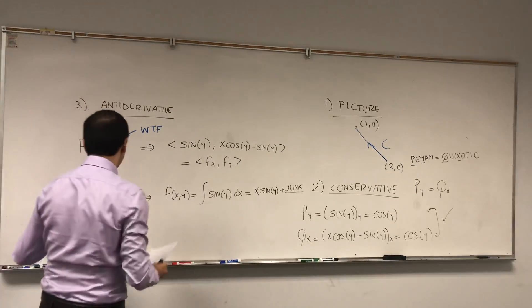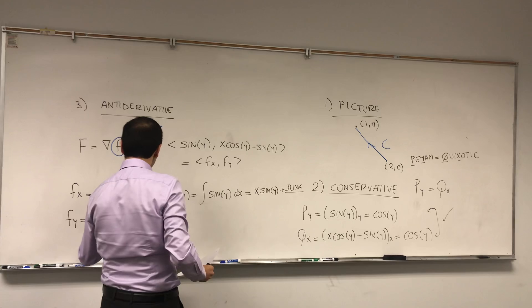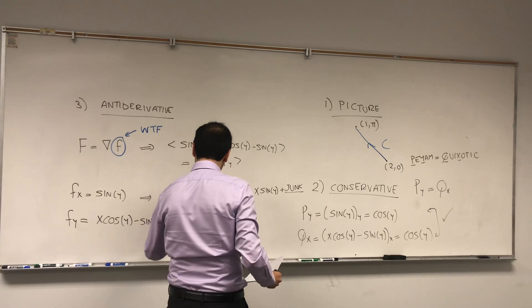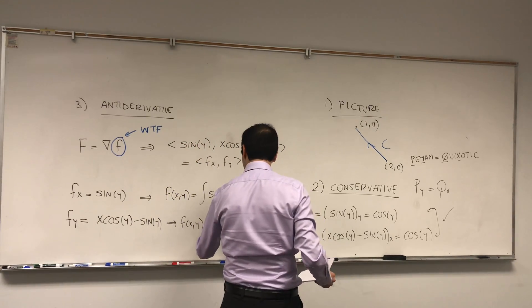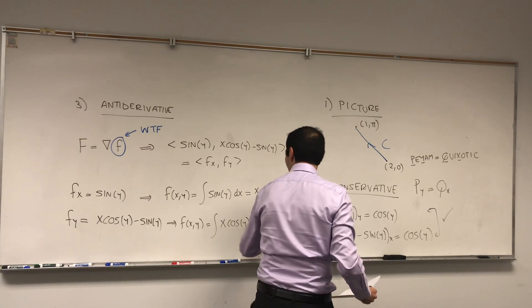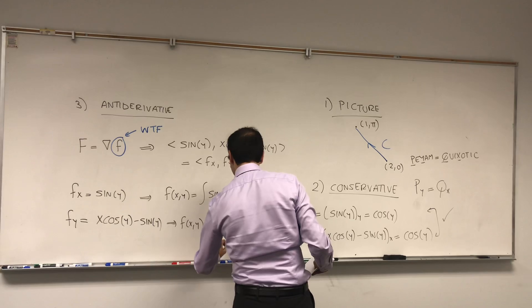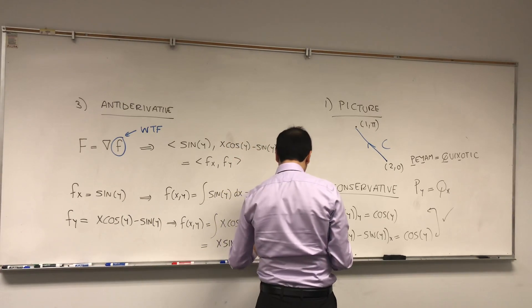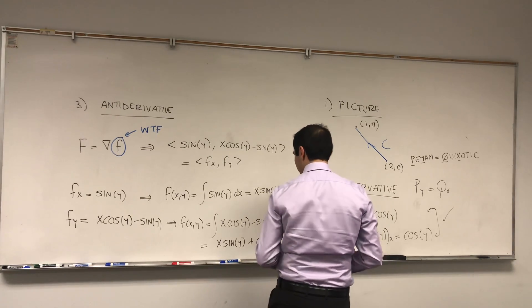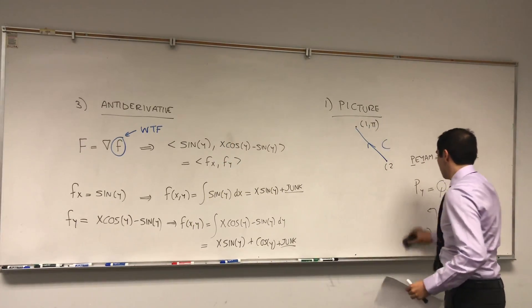So then fy becomes x·cos(y) minus sin(y). So in other words, f is just the integral of this function x·cos(y) - sin(y), but with respect to y. So what this becomes is x·sin(y), I think, plus cos(y), plus some junk that depends on x—different junk.